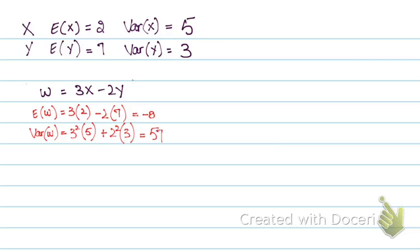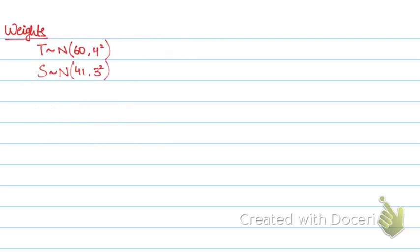So variances are always added. Whatever the sign is in the expression, that same sign applies to the mean. But when calculating the variance, it always needs to be a plus — variances are always added, never subtracted. We'll now do one question that should tackle all the kinds of questions that can appear in a paper.